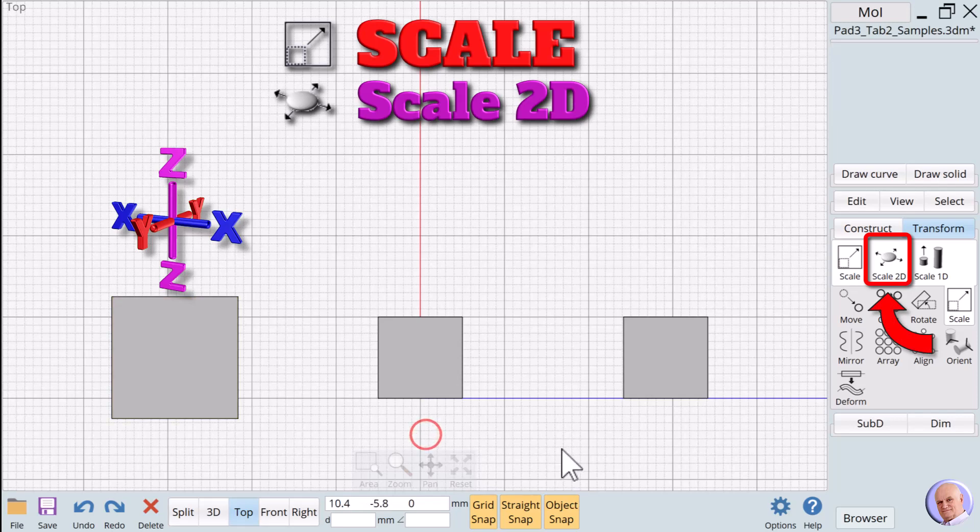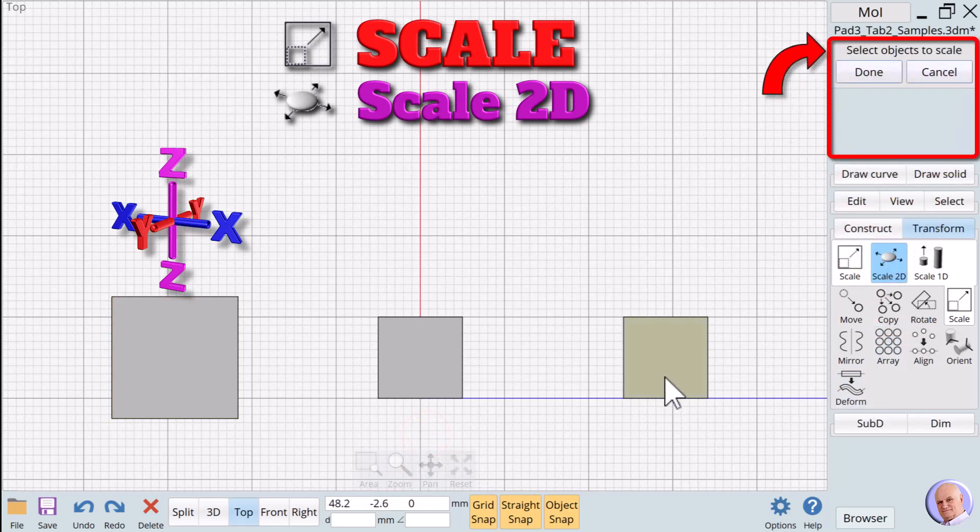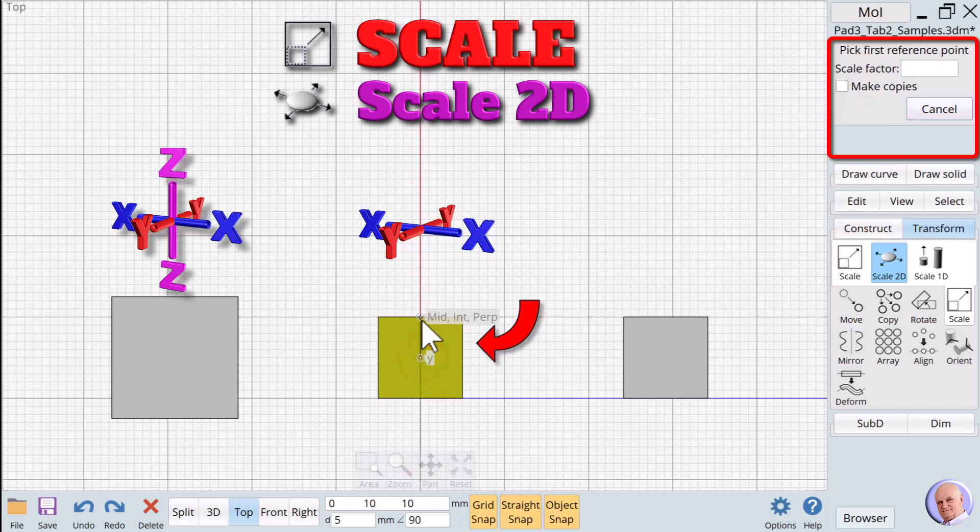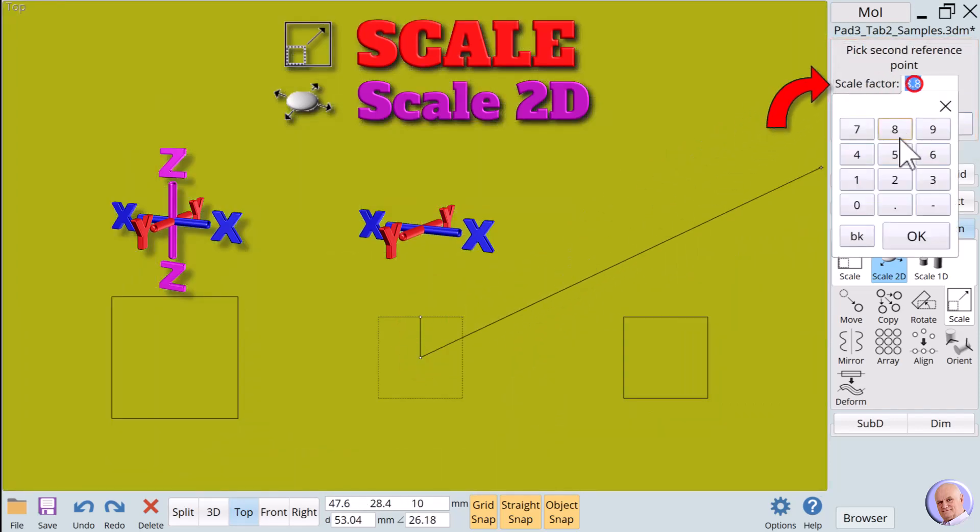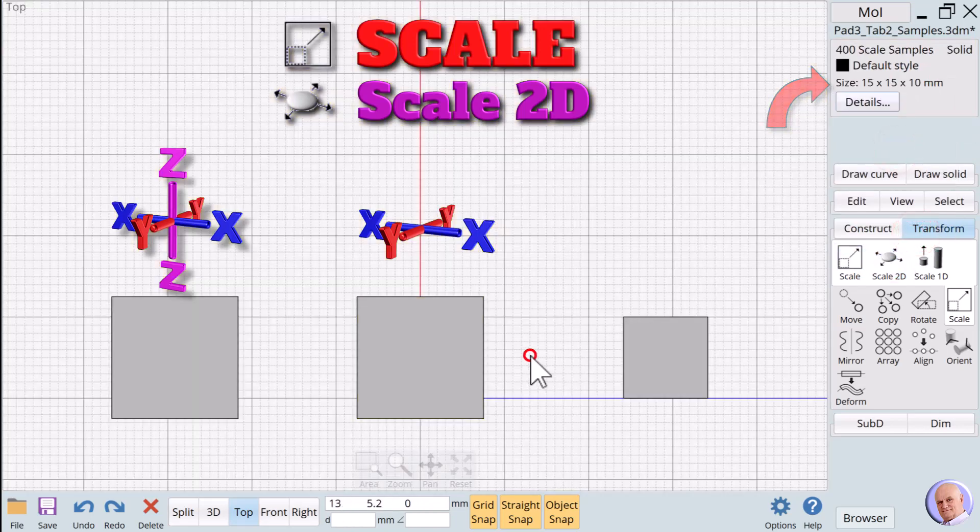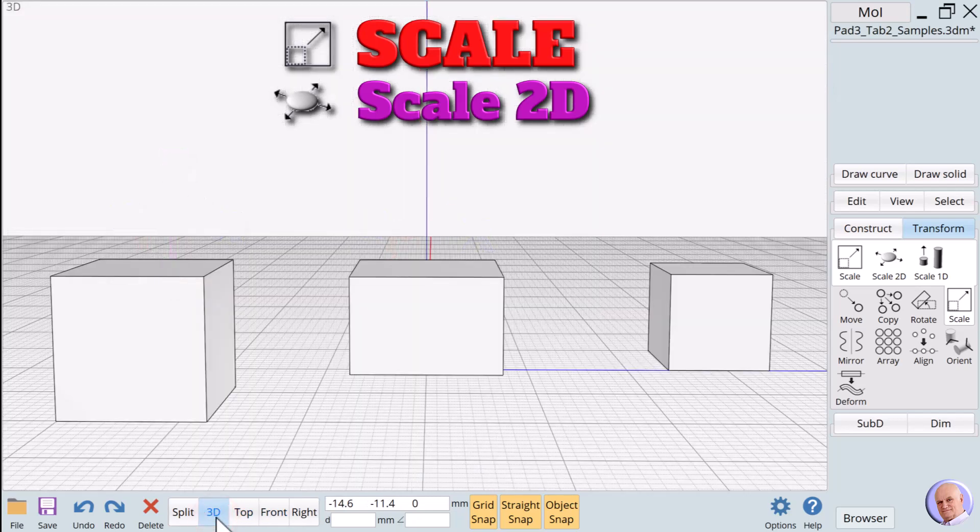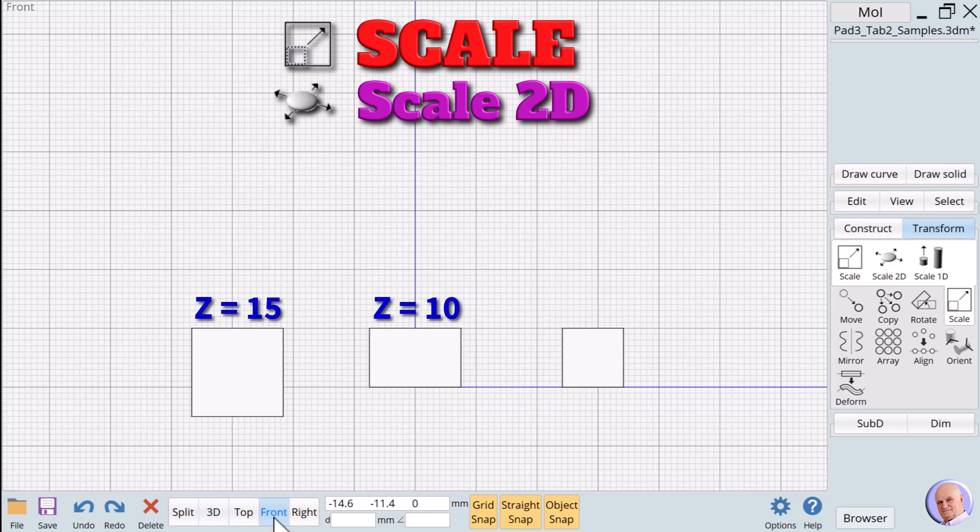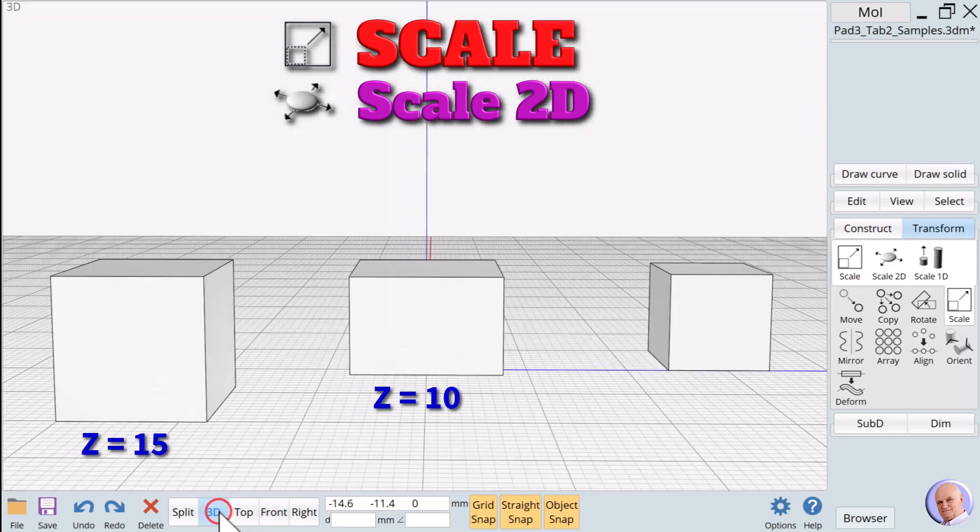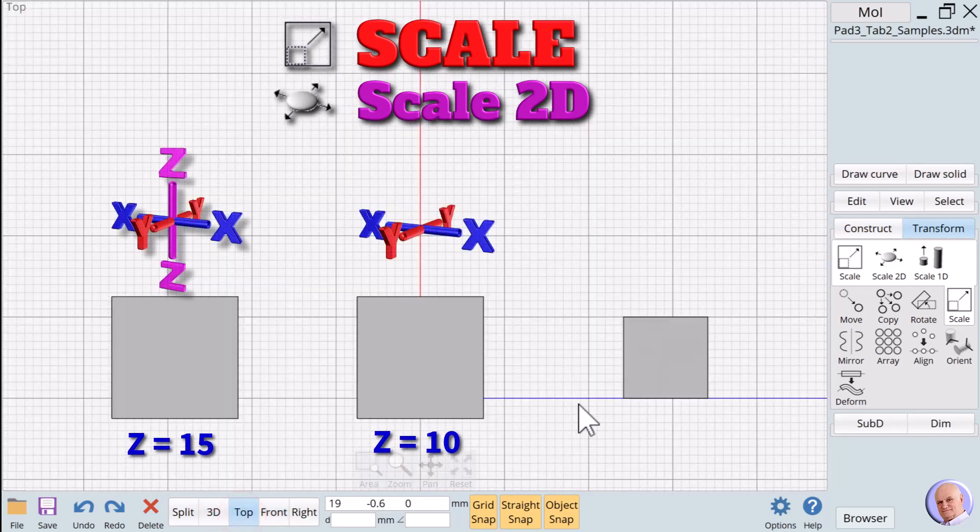Scale 2D. Scale 2D works like the default 3D scale, except it only affects the object in two axis directions, in this case, the X and Y. The third direction, in this case Z, remains unchanged. We use the same steps to perform the scaling. From this view, it looks exactly the same, but from the 3D view, we can see the difference. The cube was not scaled in the Z direction. Scale 2D is very helpful when resizing for 3D printing, because adding height also adds a lot of additional time to print.